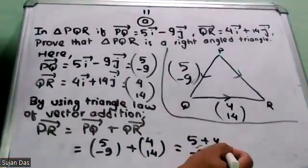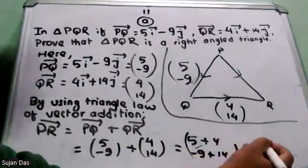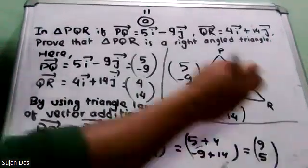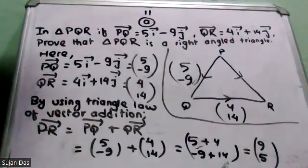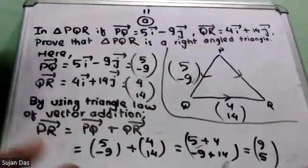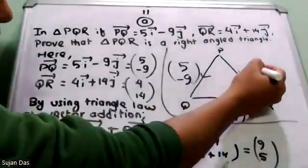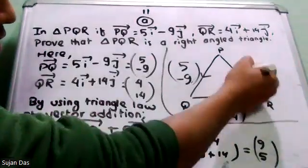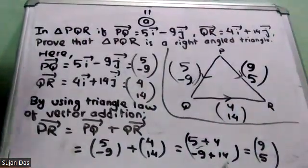Minus 9 plus 14 — tala go, tala go. So minus 9 plus 14 gives 5. So the result is 9i plus 5j. So PR vector is 9, 5.